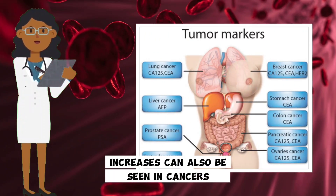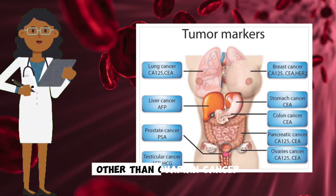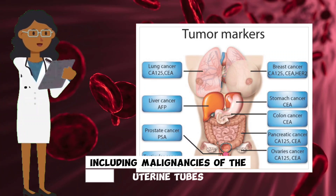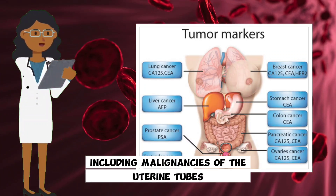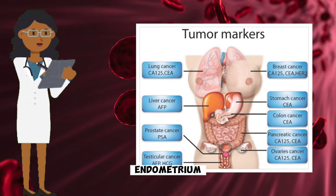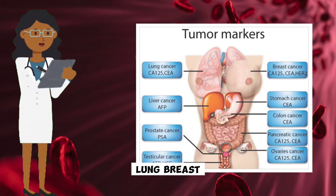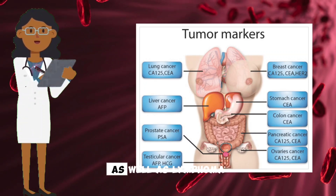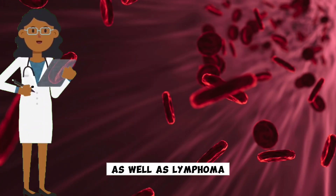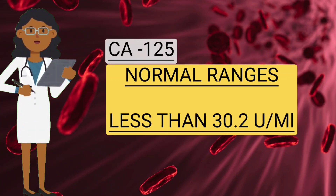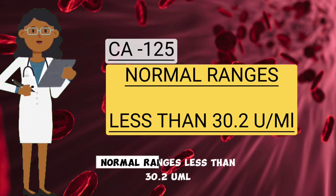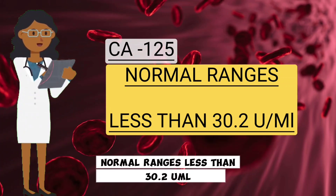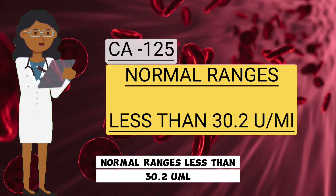Increases can also be seen in cancers other than ovarian cancer, including malignancies of the uterine tubes, endometrium, lung, breast, pancreas, and gastrointestinal tract, as well as lymphoma. Normal range is less than 30.2 U/mL.